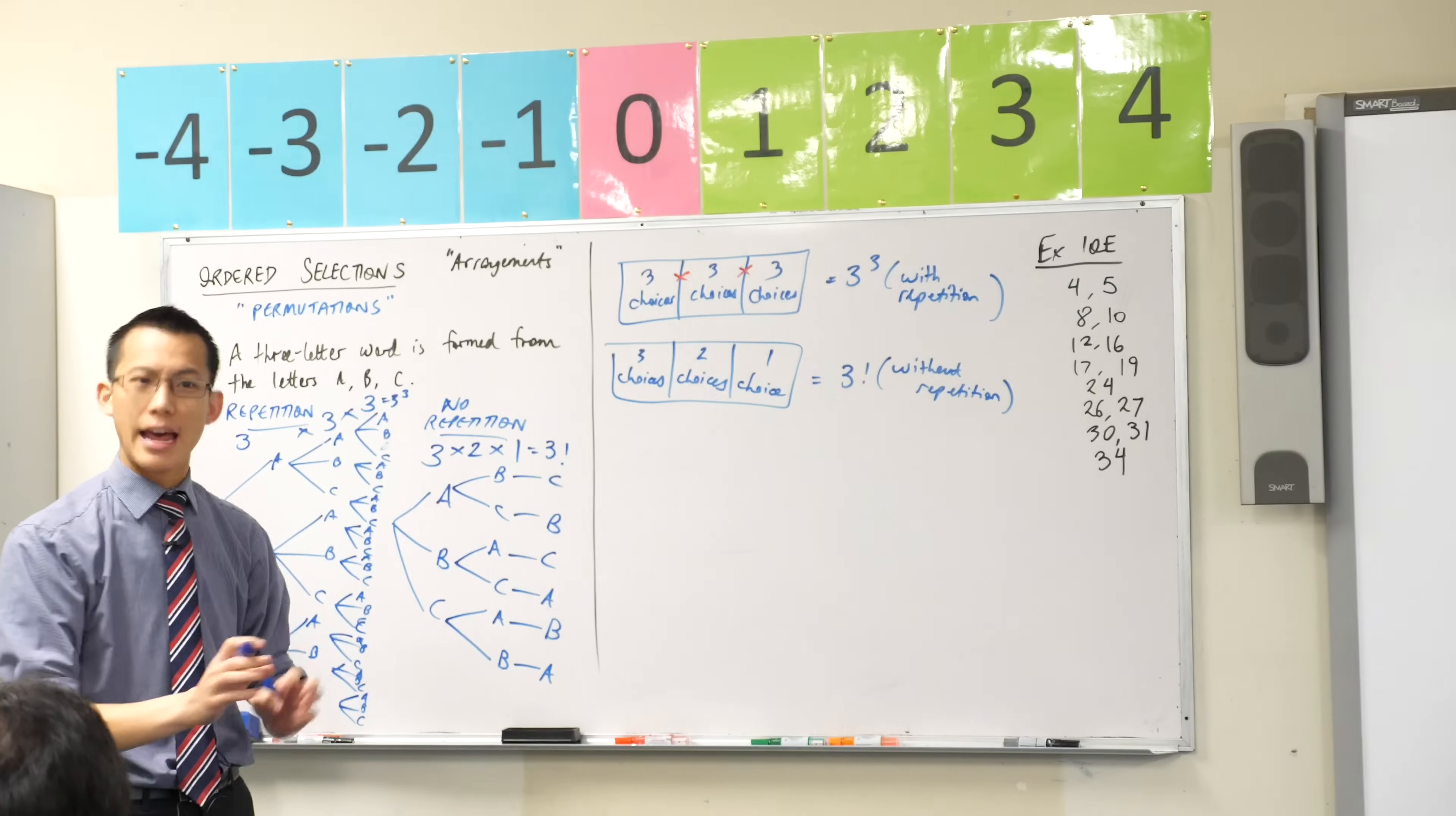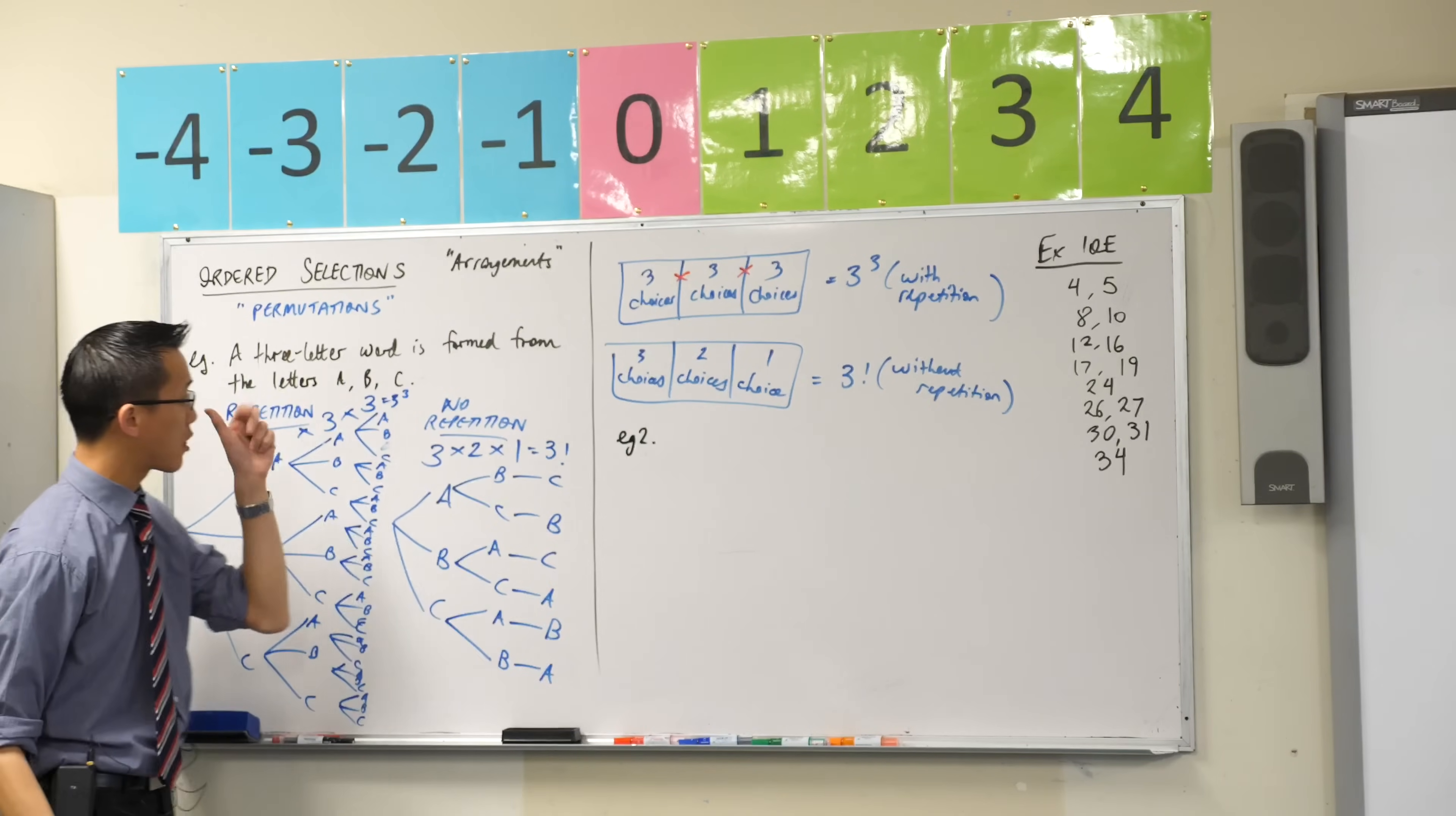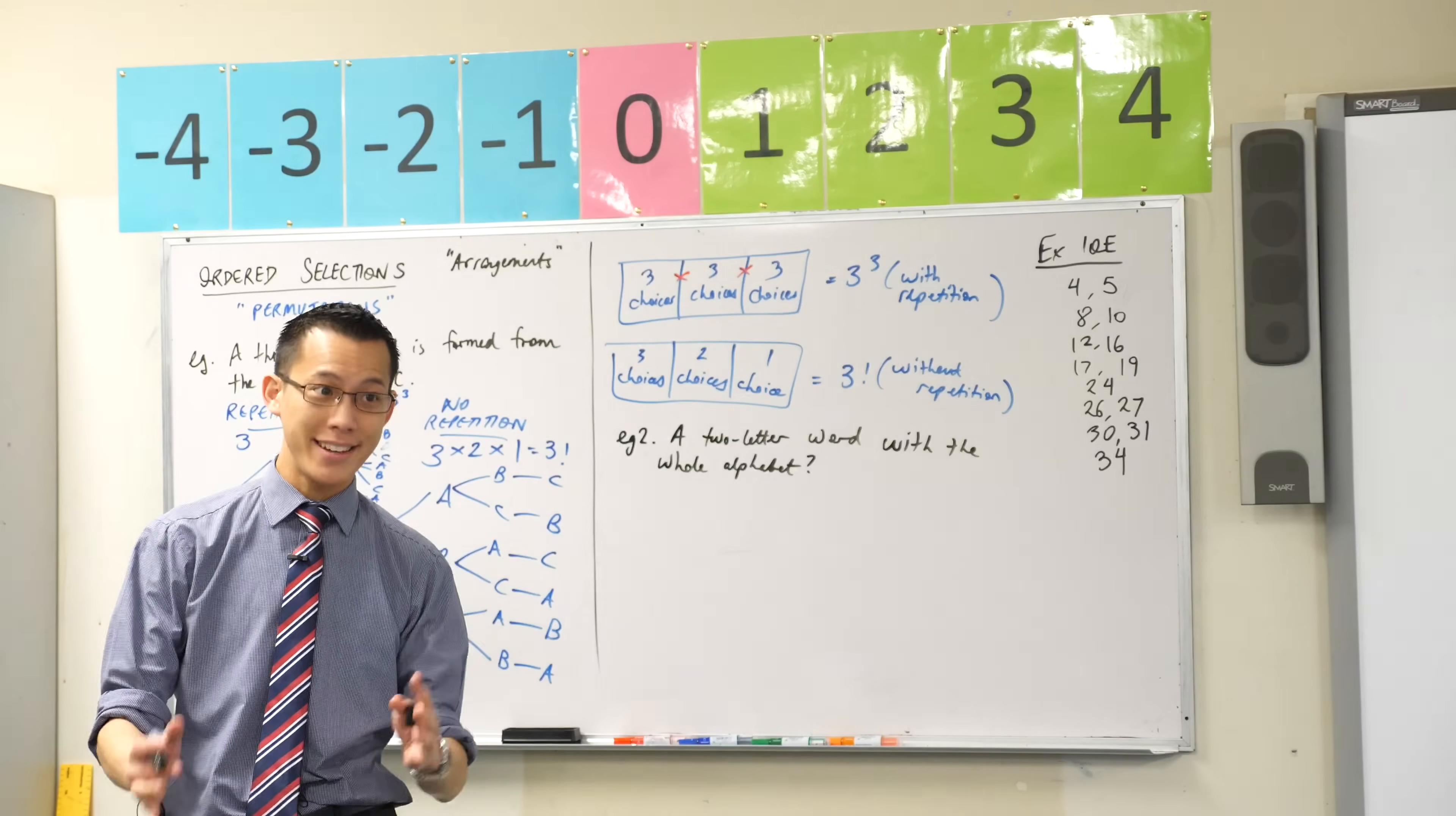Now, one last quick example before we generalize this and then add a little bit of new notation for you. This is where you consider an ordered selection, where the order of your items matter, a permutation where you've got the same length of your list as the number of items on your list. Well, what if I changed it? Here's a new example for you. Instead of making a three-letter word out of three letters, say for example, I made a two-letter word. It's not really going to be a word, but mathematicians will use this just to have any string of letters together. A two-letter word with the whole alphabet.